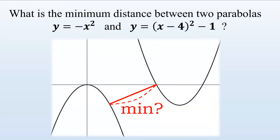Hello and welcome to my video. Today we are going to solve a calculus problem. The problem itself is actually quite simple: what is the minimum distance between two parabolas, y equals minus x squared and y equals x minus 4 squared minus 1?